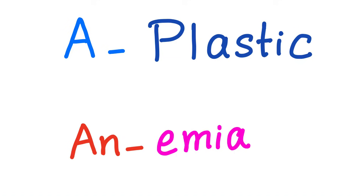What does aplastic anemia literally mean? 'A' means no. 'Plastic' means synthesis, formation, creation, genesis. So 'aplastic' means no creation, no synthesis — there is no synthesis of blood cells. 'Anemia' basically means no blood. It's not completely accurate, but it's kind of okay.